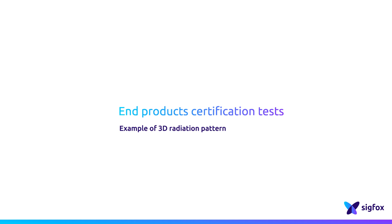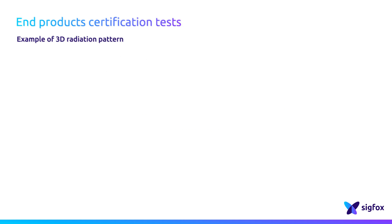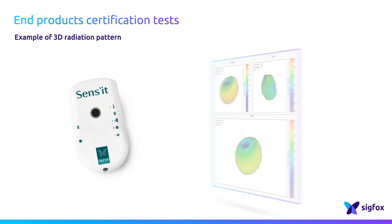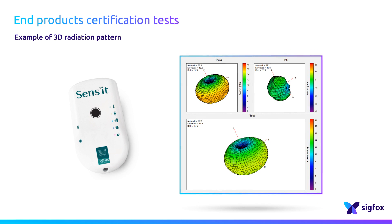This other example is the radiation pattern of the Sensit. This device is also made by Sigfox. In three dimensions, it's even more clear that this device is omnidirectional, as ERP is distributed regularly in the X, Y, and Z axis.